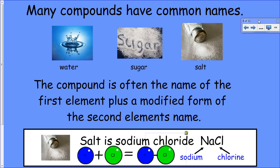Many compounds have common names. We've said that sodium chloride is salt. Also sugar and water are some examples. And again, this time we're showing it with a graphic of the atoms of the different elements. So Na plus Cl, sodium plus chlorine, gives us sodium chloride, which is also known as salt.